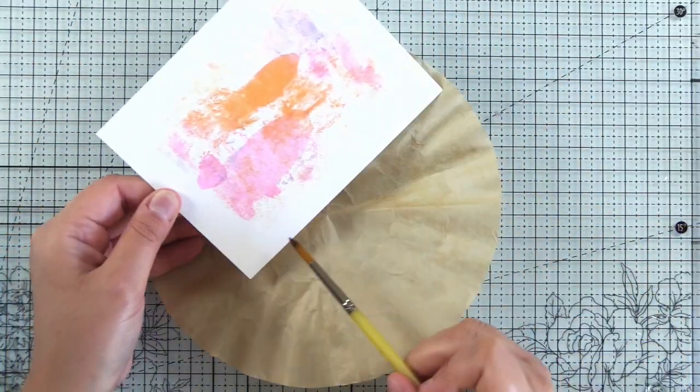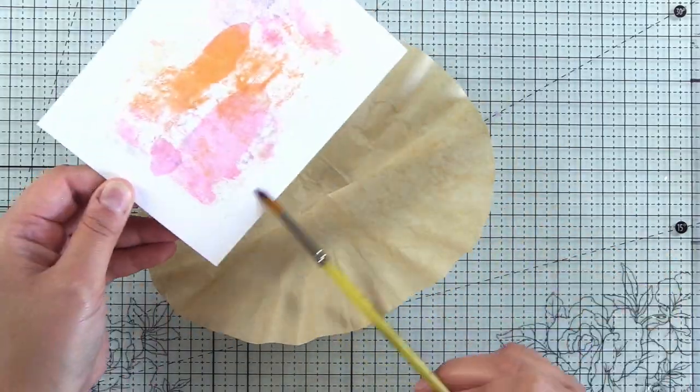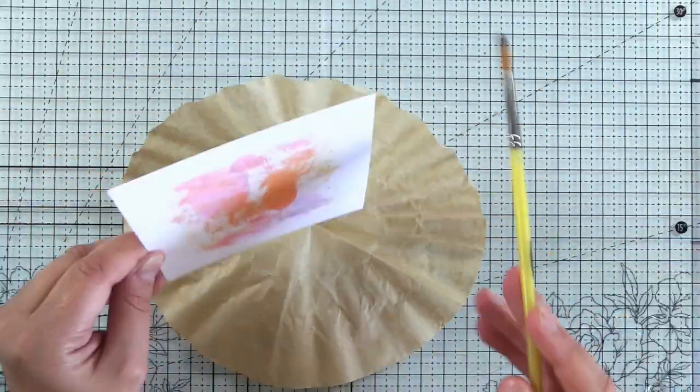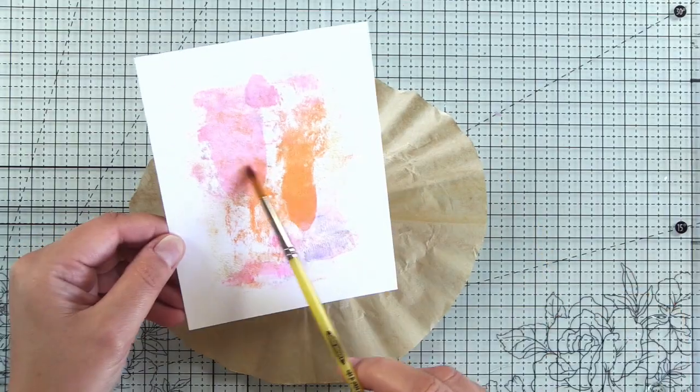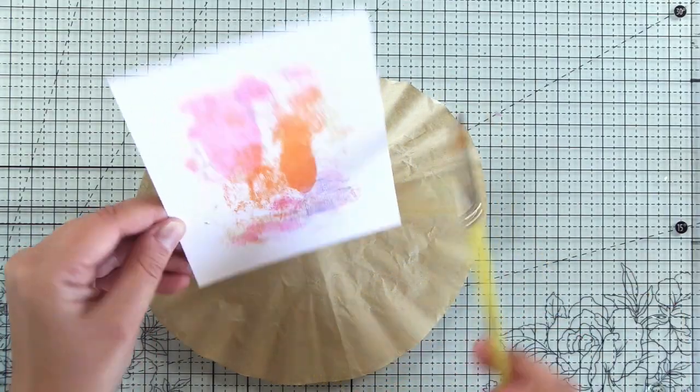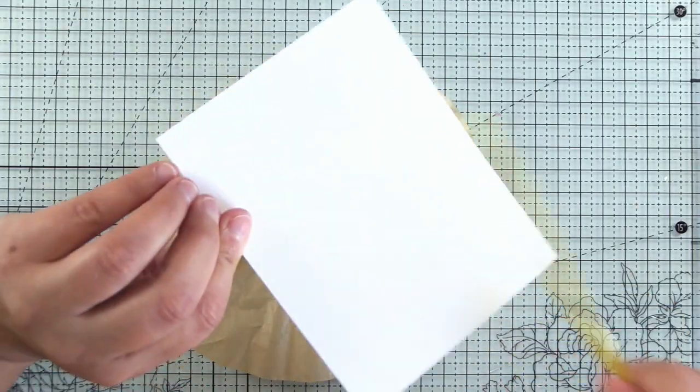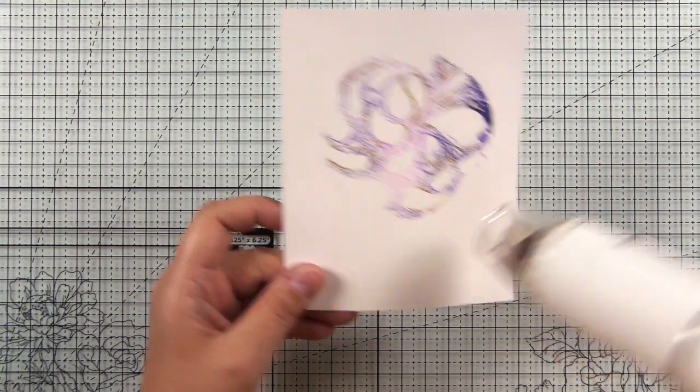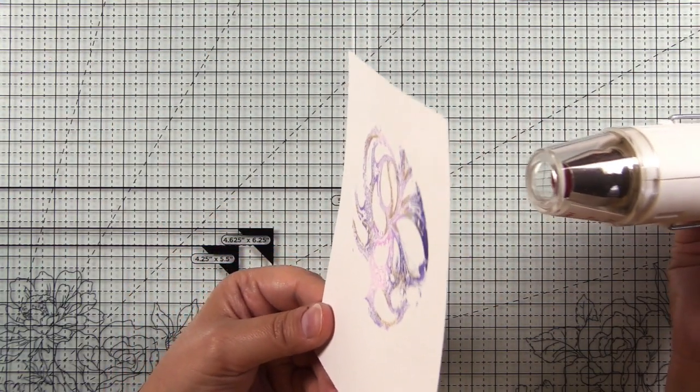And here, I'm just going to take off some of the embossing powder. So with the brayer, because it's such a wide surface, I wanted to have not straight edges, I wanted them to be a little more rough looking, distressed looking. So I just knocked some of that off. Then we'll go ahead and heat set it.